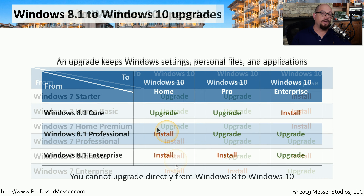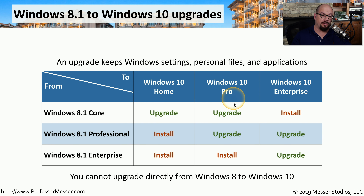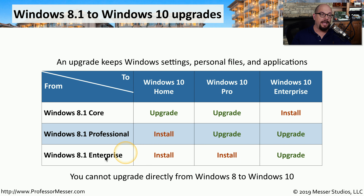To upgrade from Windows 8.1 to Windows 10, you would need to be running Windows 8.1 Core to be able to upgrade to Windows 10 Home or Windows 10 Pro. If you're already running Windows 8.1 Professional, you can upgrade to Windows 10 Pro or Windows 10 Enterprise. And if you're running Windows 8.1 Enterprise, your only option is to upgrade to Windows 10 Enterprise.